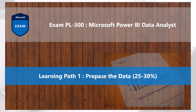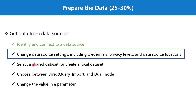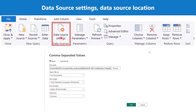Welcome back to the PL300 exam preparation series where we are exploring the first learning path: prepare the data. We are talking about the second topic of the section 'get data from data sources,' specifically changing data source settings including credentials, privacy levels, and data source locations. In the previous video we covered data source settings and locations, and in this video we are going to talk about credentials and privacy levels.